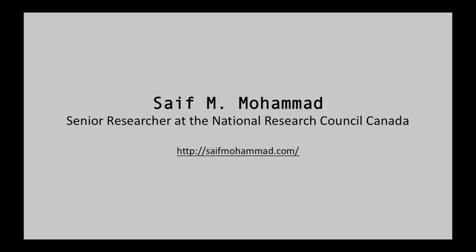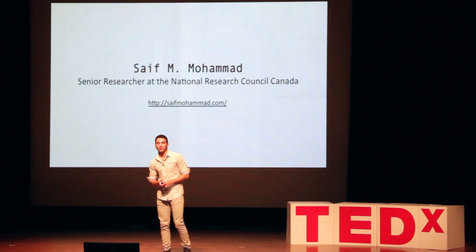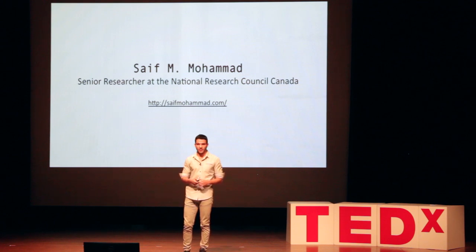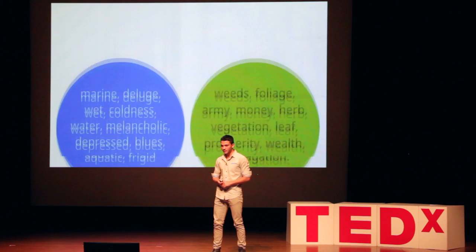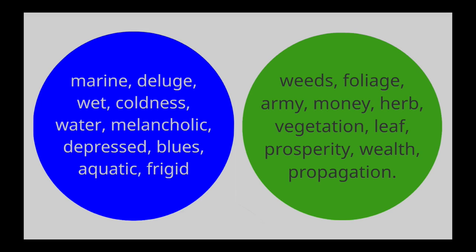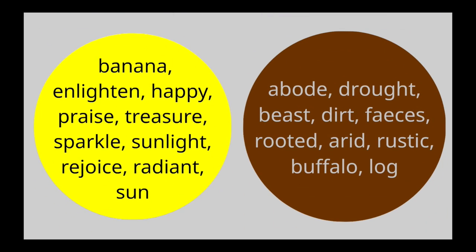Following this idea, Saif Mohamed, a senior researcher at the NRC, conducted polls to determine what color people usually associated with the majority of words in the English language. These are some of the top words per color. As you can see, sometimes it's very evident, such as leaf being green, but then it can get more interesting, such as creativity being orange or happiness being yellow.